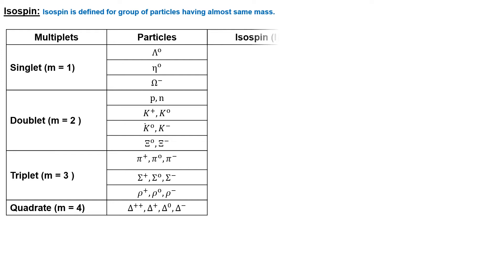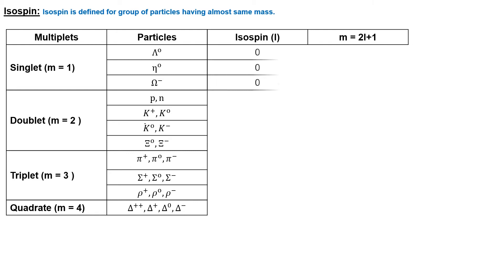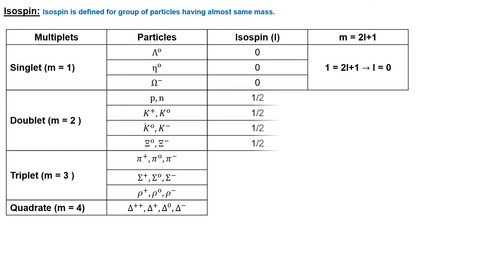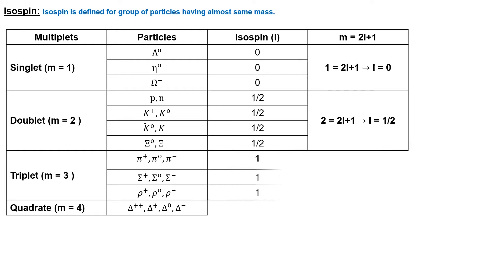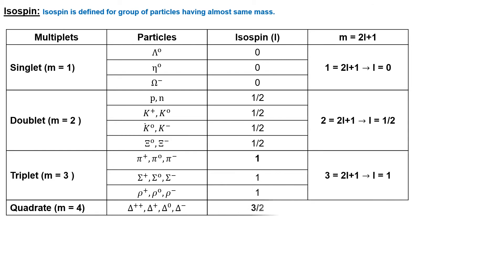Isospin is defined for these groups, which are collectively called multiplets. Their multiplicity is given by 2I + 1, where I is the isospin. So isospin is 0 for a singlet, 1/2 for a doublet, 1 for a triplet, and 3/2 for a quadruplet.